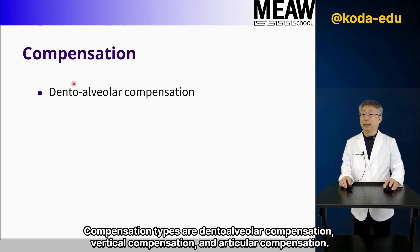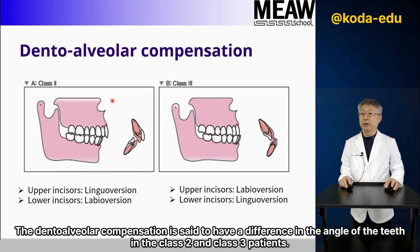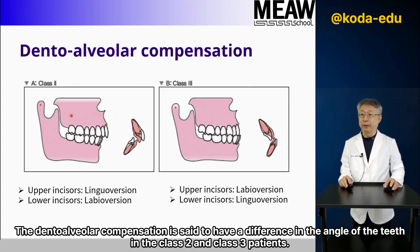Compensation types are dental alveolar compensation, vertical compensation, and articular compensation. Dental alveolar compensation refers to the difference in the angle of the teeth in Class 2 and Class 3 patients.